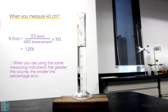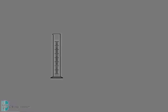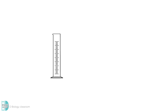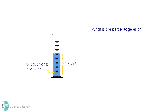Now I will give you a question. Read the question, pause the video, and do your calculation before you continue. You use a large measuring cylinder to measure solution A. The graduations are every 2 cm³. You measured 60 cm³ with it. So what is the percentage error?